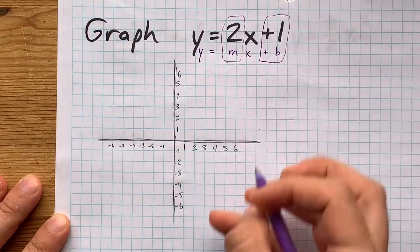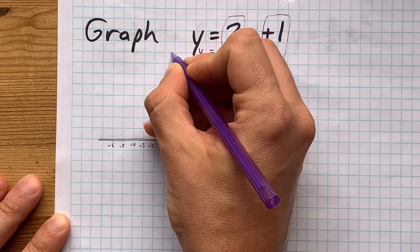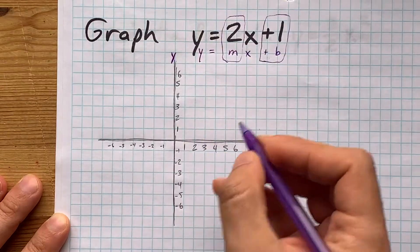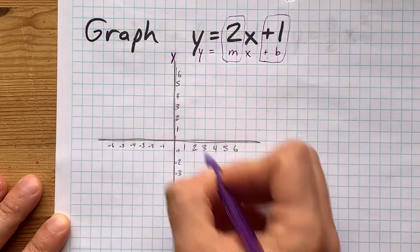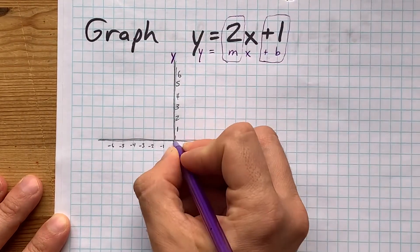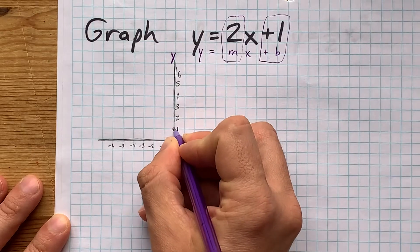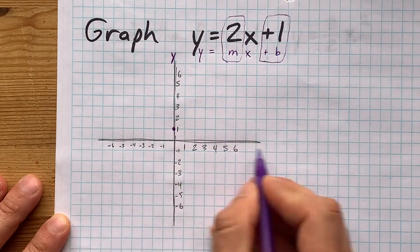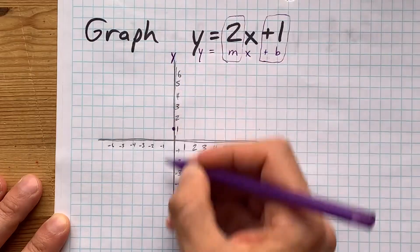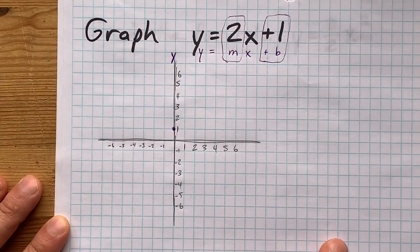b represents the point along the y-axis — that's the up-down axis — where the line crosses it. Here it's going to cross at positive 1, that's one unit above where the x-axis is, at positive 1 on the y-axis.